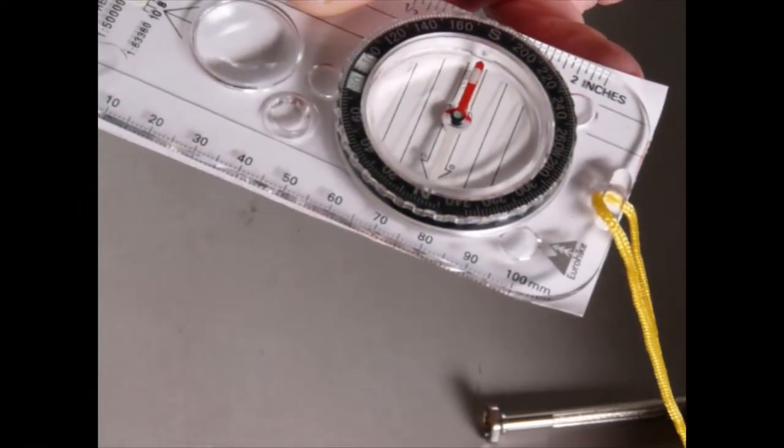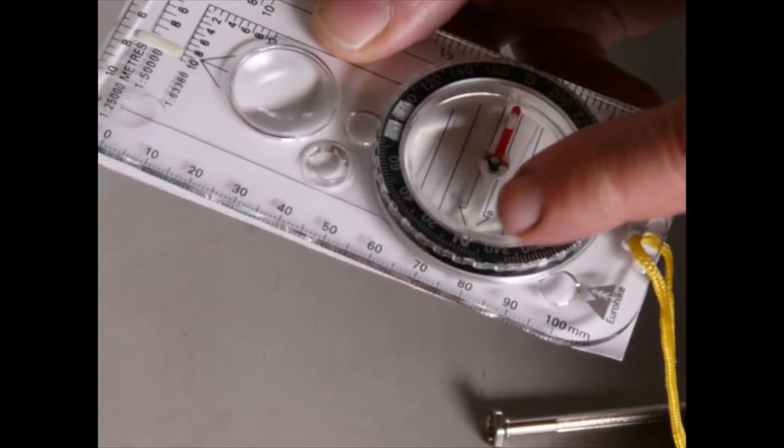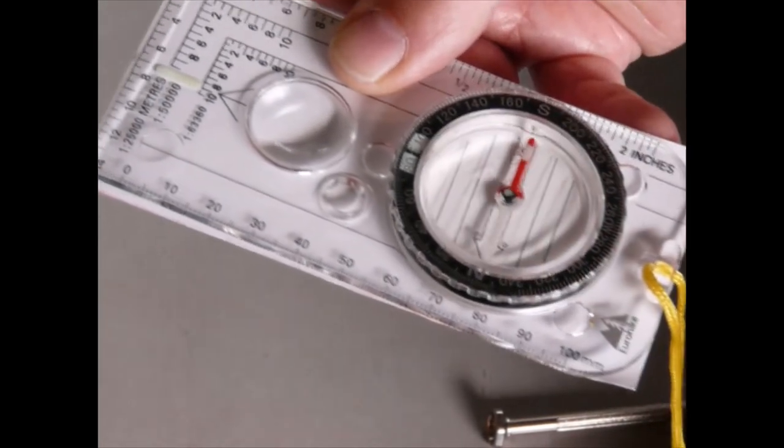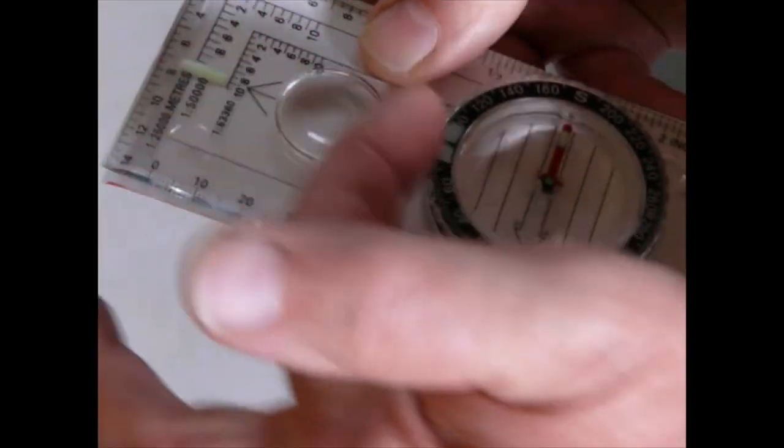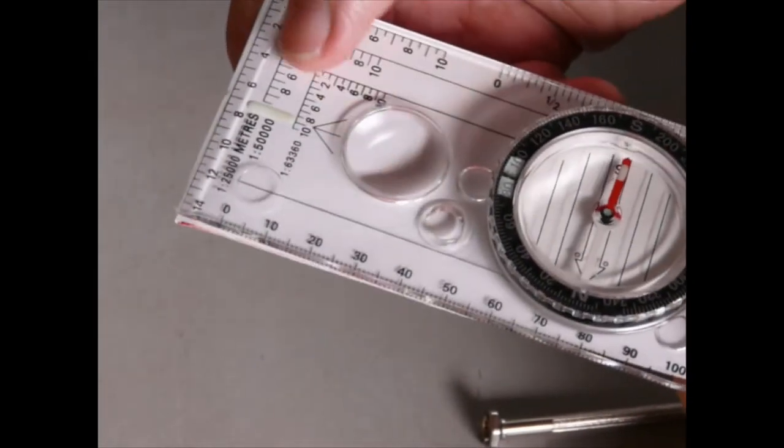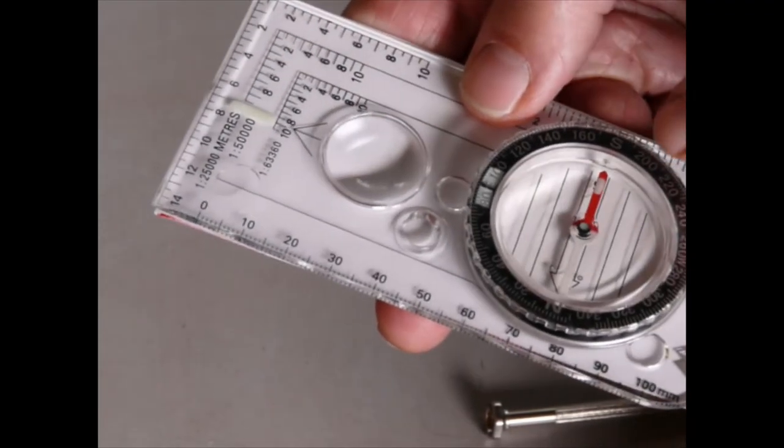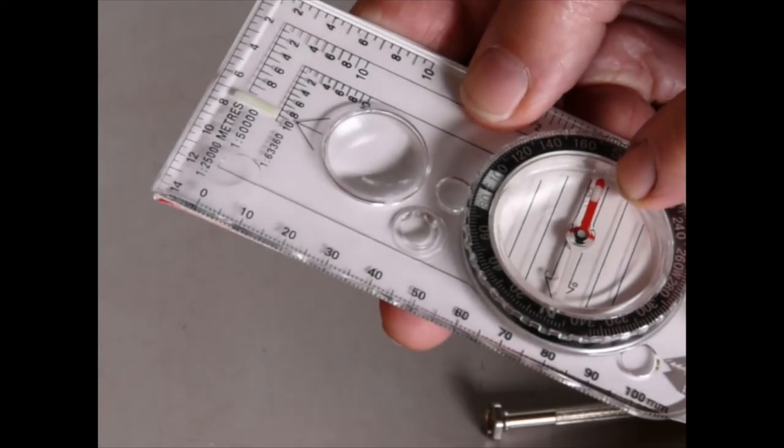Now what youngsters will do is they'll always want to follow this needle here. That's wrong. This is the direction to follow. That's why the arrow on the base is the most important part. But what you have to do is to get it so that the red end of this needle points to the north.